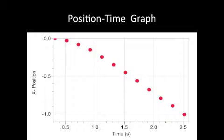This first graph is a position-time graph, and we can see that in the first 2.5 seconds the car traveled one meter. It started by moving with a quadratic curve as the car accelerated, and then it moved more linear as it moved toward a constant velocity. The displacement is negative because it started from the origin and went left.